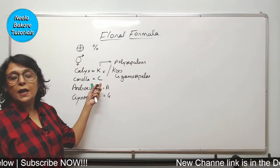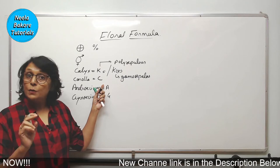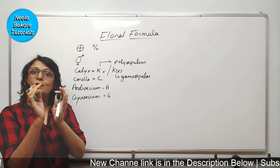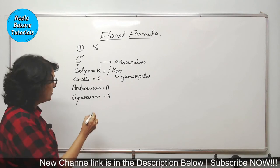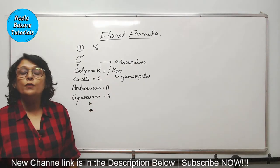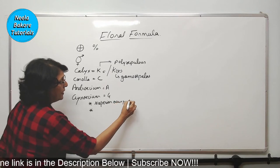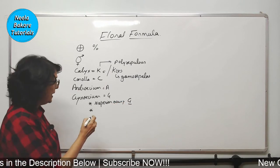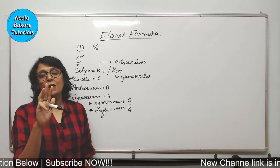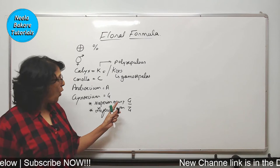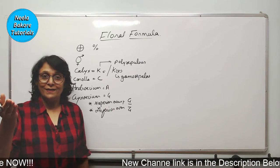Similarly, the petals can also be free and fused. If they are free, we call it polypetalous condition and write the number as it is. If the petals are fused, we use the word gamopetalous and put that number in brackets. The same is applicable for Androecium and Gynoecium. When we talk about Gynoecium, we add whether the ovary is superior or inferior. For superior ovary, we write G with a line below it. For inferior ovary, we write G with a line above it. The three families in our syllabus all have superior ovary — that means they all have hypogynous flowers.